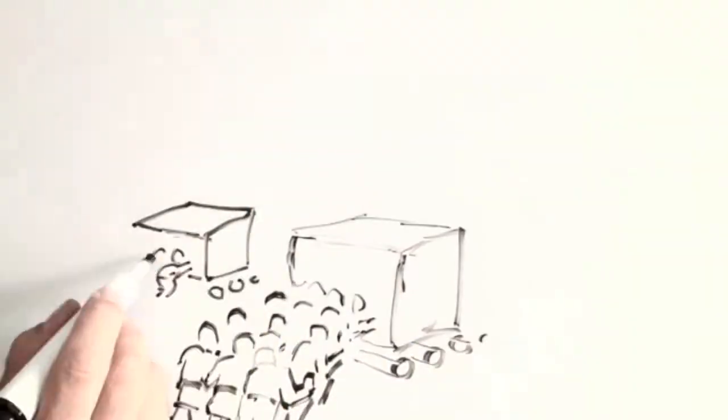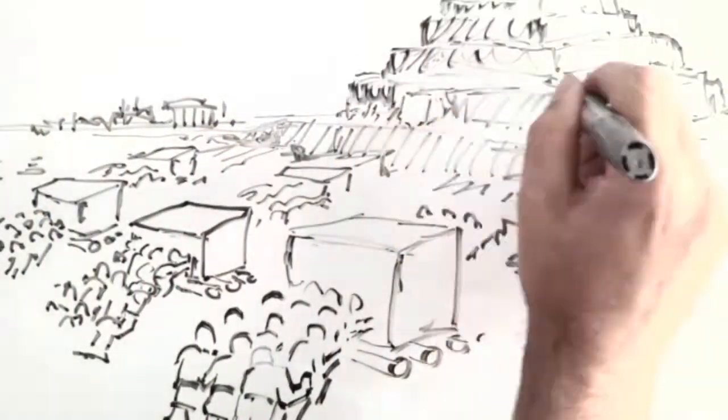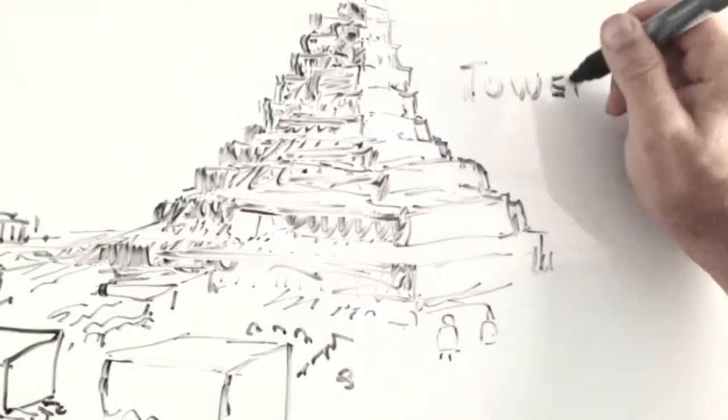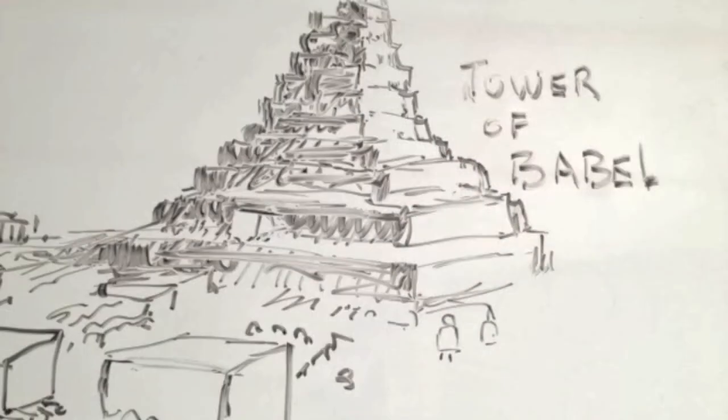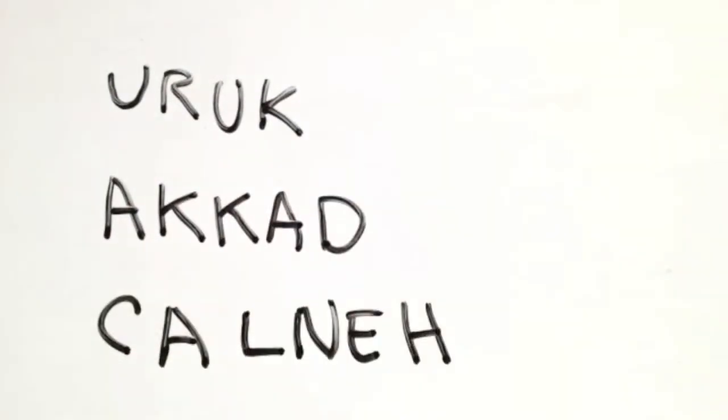According to a lot of Hebrew and Christian tradition, Nimrod is the guy that builds the Tower of Babel in the land of Shinar. It goes on to say that he started the early kingdoms of Uruk, Akkad, and Chaldee.